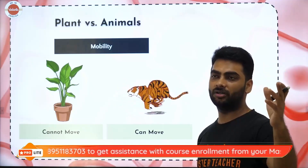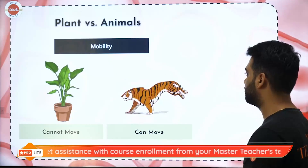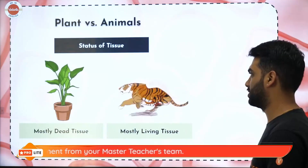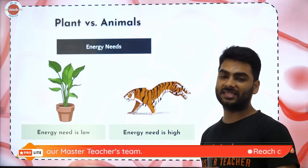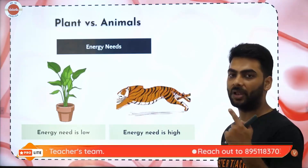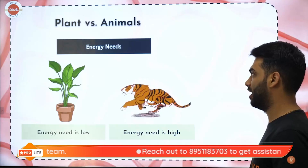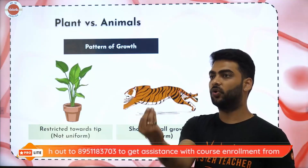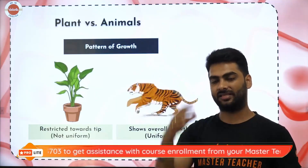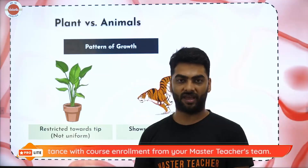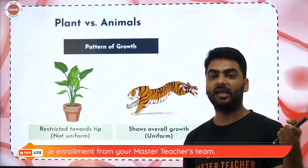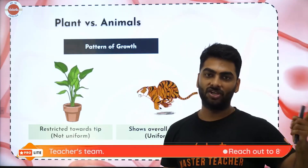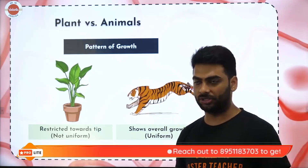Growth, shedding of leaves and all that comes as a byproduct of these processes. Usually plants have dead tissues and animals have living tissues. Plant energy needs are less because the processes and movements happening in the plants are less, whereas animals' energy need is far higher. Plants' growth is restricted towards the tip, but humans or animals will grow from everywhere — even after reaching the age of 18, your body is aging, and aging is again a type of growth.